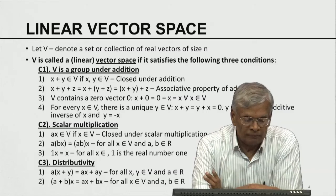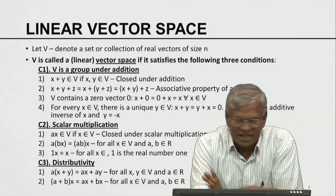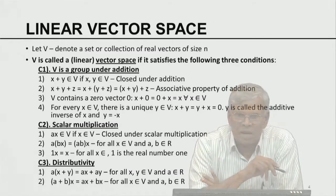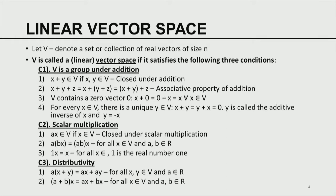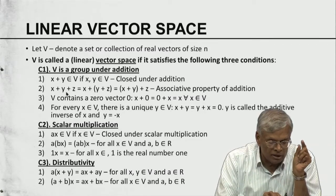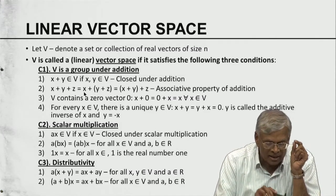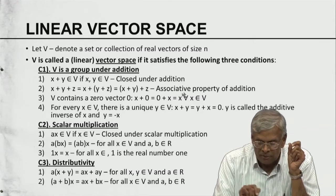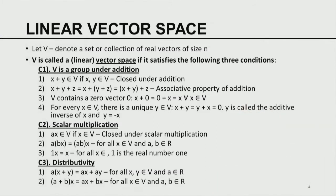I would like to introduce the notion of a vector space. Let V denote a collection of real vectors of size n. For V to be called a linear space, or vector space, or linear vector space, it must satisfy three conditions. The first is that V is a group under addition: if I take any vectors in V, their sum is also in V — it is closed under addition. This operation of vector addition is also associative.